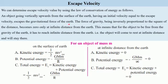An object will be able to escape from the Earth's gravitational force only if its initial velocity is equal to the escape velocity. The force of gravity, being inversely proportional to the square of the distance, becomes zero only at infinite distance from the Earth.